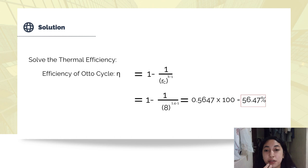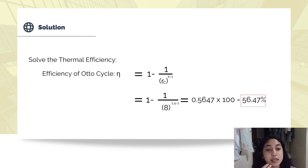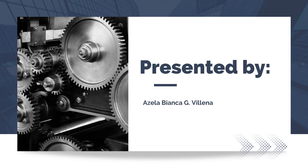Finally, we solve for the thermal efficiency. Efficiency equals 1 minus 1 over the compression ratio raised to K minus 1: 1 minus 1 over 8 raised to 1.4 minus 1 equals 0.5647, or 56.47%. Therefore, the thermal efficiency of the Otto cycle in this problem is 56.47%.